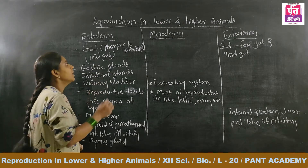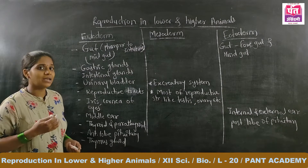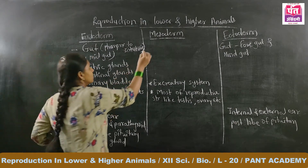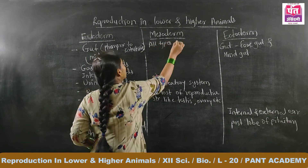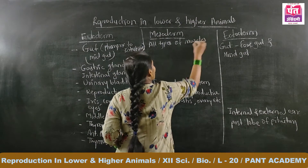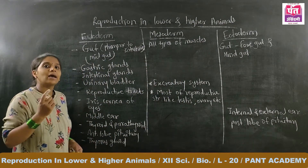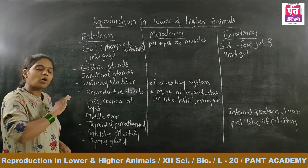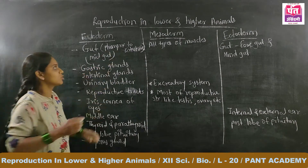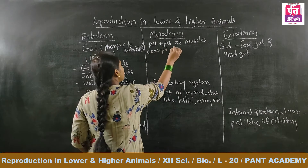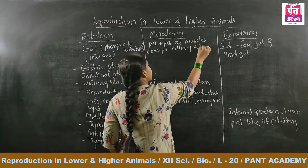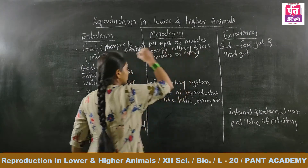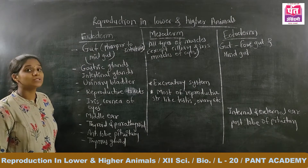Now let's look at the mesoderm. All types of muscles present in our body are made up of mesodermal cells — all types of muscles — except the ciliary and iris muscles of the eyes. The ciliary and iris muscles of the eyes are made up of ectoderm, not mesoderm.